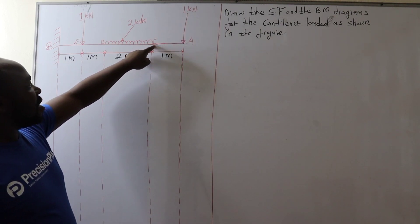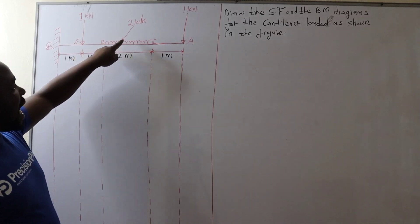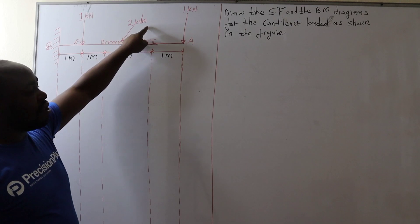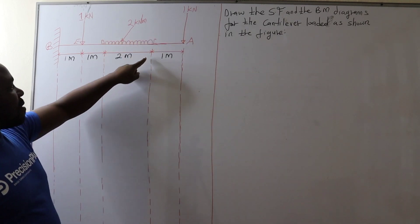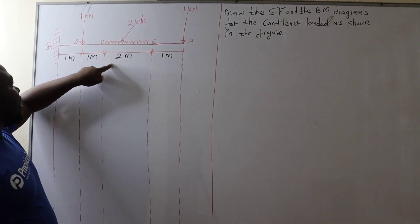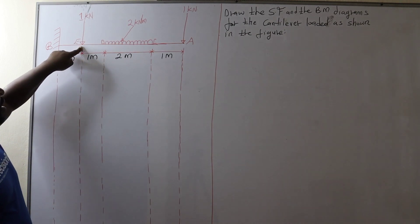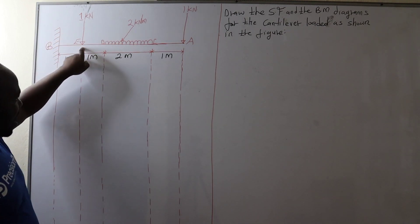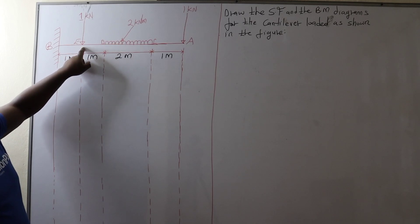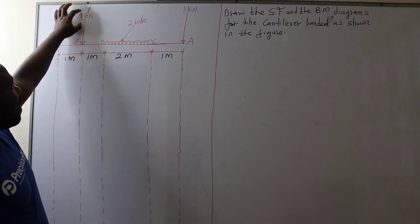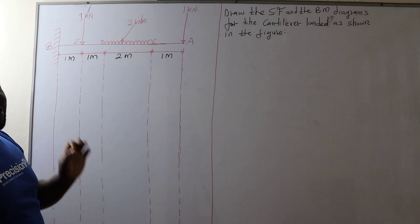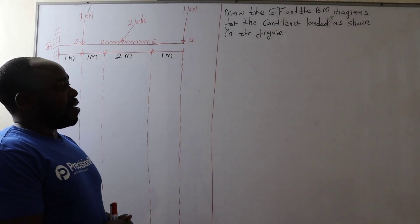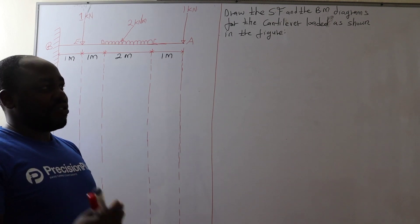Then between point C and D it is carrying a uniformly distributed load of 2 kN per meter at a span of 2 meters. Between point D and E it is free, not carrying any load, but at point E the cantilever is loaded with a point load of 1 kN. So the first thing to do is determine the shear force.